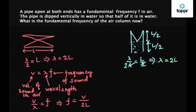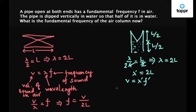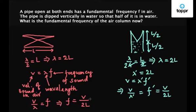Let's call this wavelength lambda dash. So lambda dash equals 2L. Then V equals lambda dash times F dash, where F dash is the new frequency when the organ pipe is submerged in water. So V upon lambda dash equals F dash. Since lambda dash equals 2L, F dash equals V upon 2L, and from the earlier case we know that V upon 2L is simply F. So F dash equals F.